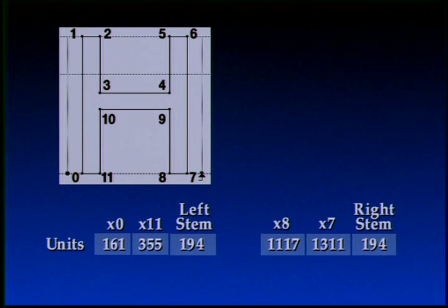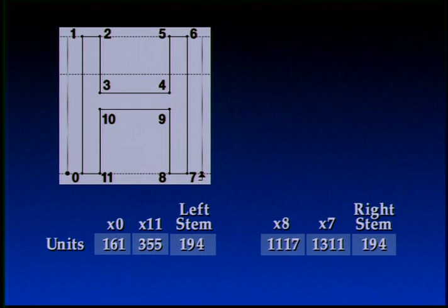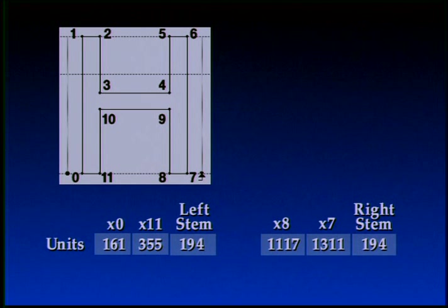Unfortunately, we also have some quality problems to tend to. Symmetry control is the most apparent problem when scaling control point coordinates on character outlines. Let us look at this H, shown along with the x-coordinates of the major control points. In the digitized outline, point 0 has the x-coordinate of 161 design units. The points 11, 8, and 7 have the x-coordinates 355, 1117, and 1311 respectively. We see that the two stems of the H have the same thickness of 194 design units.